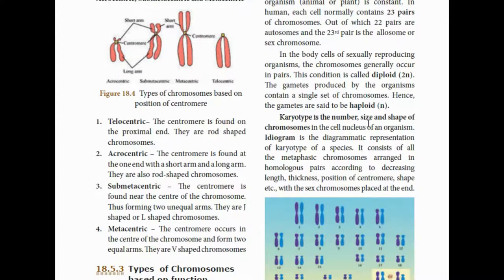Karyotype is the number, size, and shape of chromosomes in the cell nucleus of an organism. In one cell, in the nucleus, looking at one number of chromosomes — what size and what shape they are — that complete picture is called the karyotype.